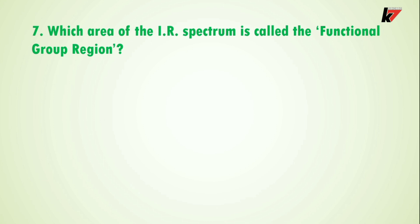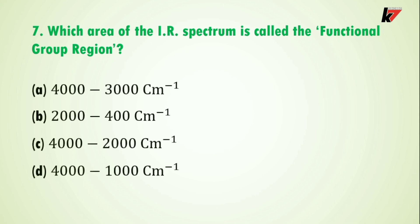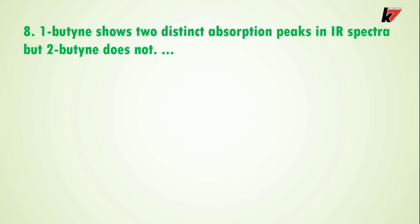Question 7: which area of the IR spectrum is called the functional group region? Here are four options. The correct answer is option D: 4000–2000 cm⁻¹ of the IR spectrum is called the functional group region.